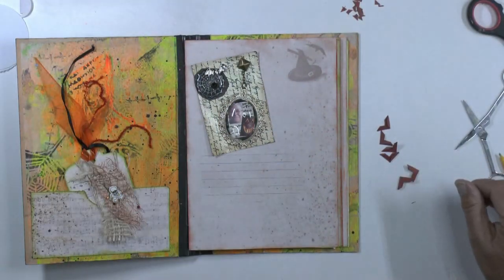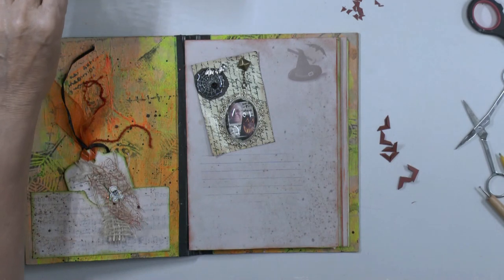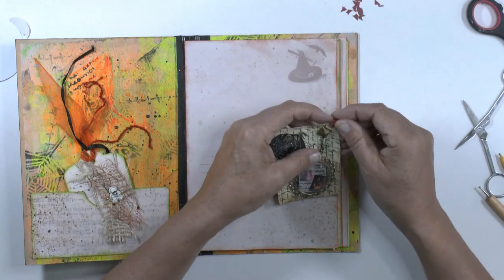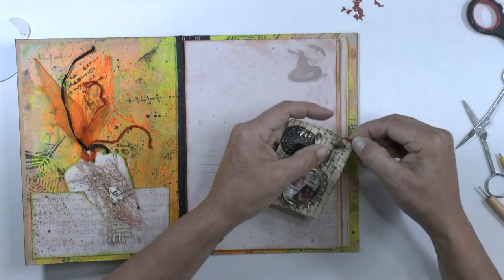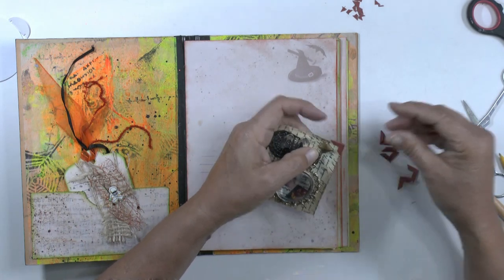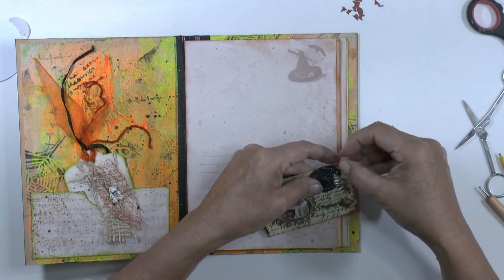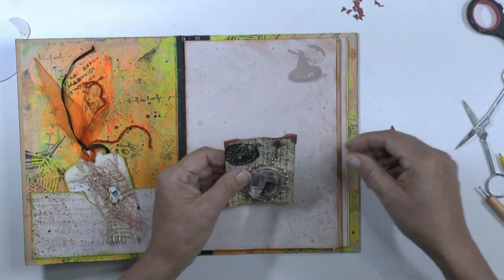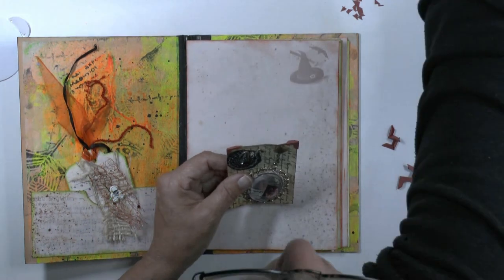So I made my bunch of photo corners. And now I will glue them on. And how do I do that? Like this. Just the first two with tacky glue.